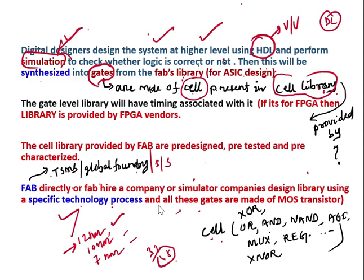All these gates — all these cells — are made of MOSFET transistors. This can be CMOS or NMOS. Whatever cell or basic component is present inside the cell library is designed using a specific technology process with MOSFET transistors, and all these gates are used to design our logic during the synthesis process.